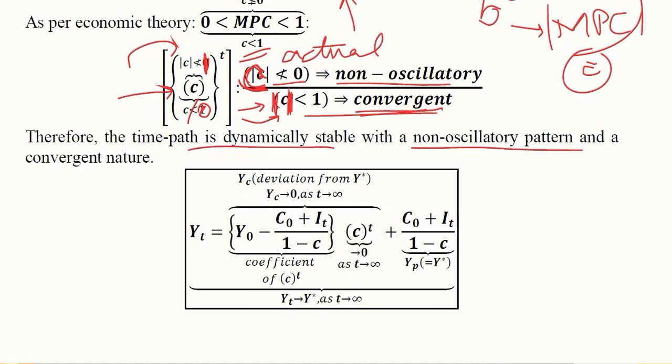This is a more elaborated form. This whole expression is the coefficient of Ct. The coefficient shows the deviation of the time path from the equilibrium value, and indicates that it will converge to equilibrium as we move forward.